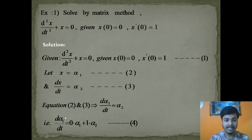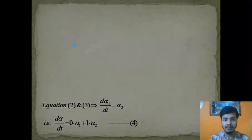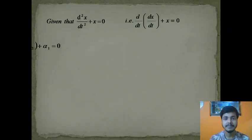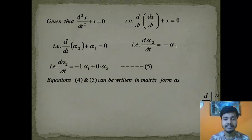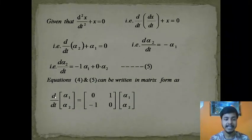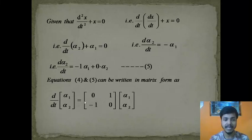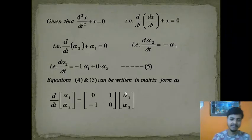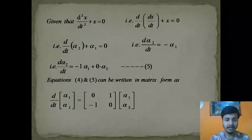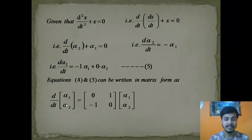Now using equations 4 and 5 we can write the given equation in matrix form. On the left-hand side we have the column vector [d/dt(α₁), d/dt(α₂)], which equals the coefficient matrix [0, 1; −1, 0] multiplied by the column vector [α₁, α₂]. When you solve this you recover equations 4 and 5.